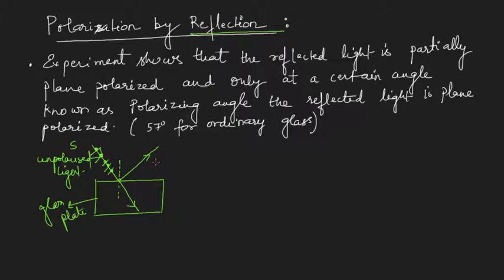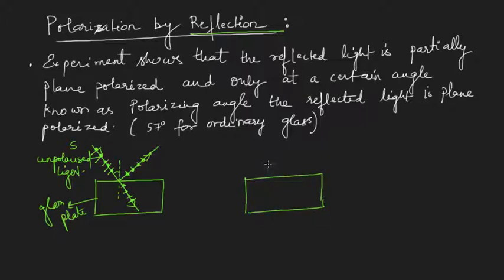What was observed experimentally is that the reflected light was partially polarized. When light was incident at any arbitrary angle, the reflected light had more of the perpendicular component and less of the parallel component. The refracted light had both components. But at a particular angle of incidence, the reflected light was completely polarized — it had only the perpendicular component, meaning vibrations perpendicular to the plane of incidence.